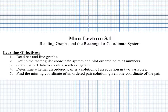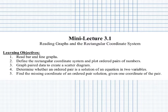In section 3.1 we are reading graphs and the rectangular coordinate system. Our objectives are to read bar and line graphs, define the rectangular coordinate system and plot ordered pairs of numbers, graph paired data to create a scatter diagram, determine whether an ordered pair is a solution of an equation in two variables, and find the missing coordinate of an ordered pair solution given one coordinate of the pair.